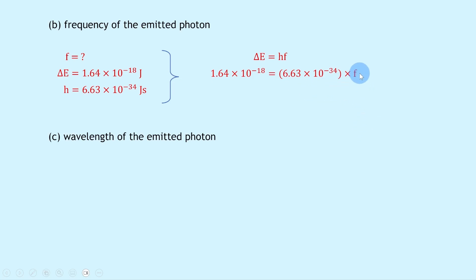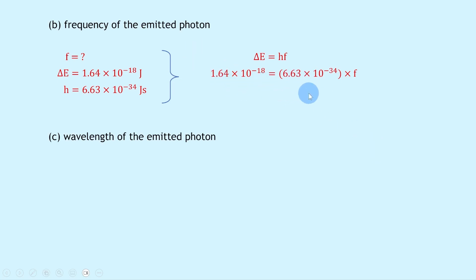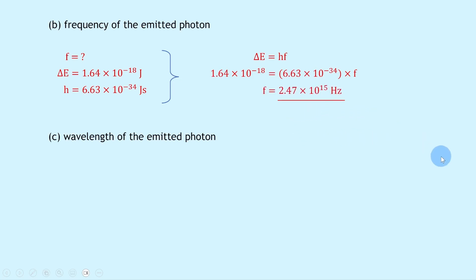To find f, divide both sides by Planck's constant. Doing 1.64 × 10⁻¹⁸ divided by 6.60 × 10⁻³⁴ in your calculator gives f = 2.47 × 10¹⁵ hertz.